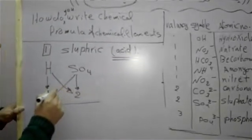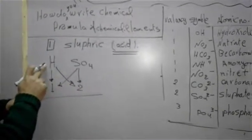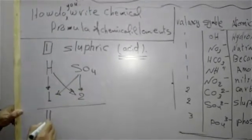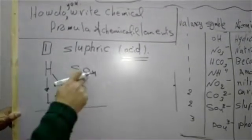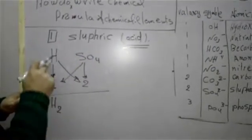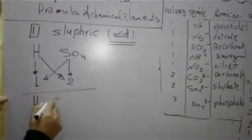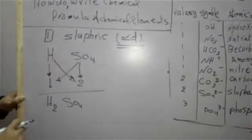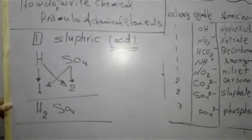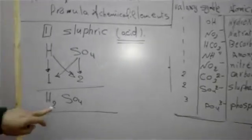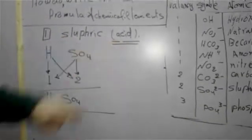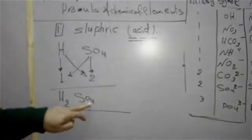By this, hydrogen will take the balance of sulfate and sulfate will take the balance of hydrogen. Don't write 1. The result is H2SO4. Sulfuric acid is H2SO4.